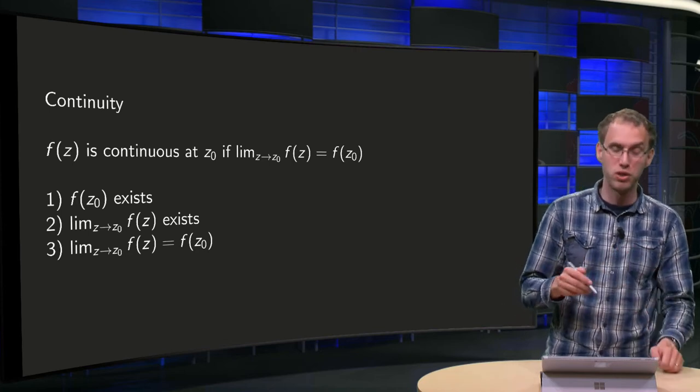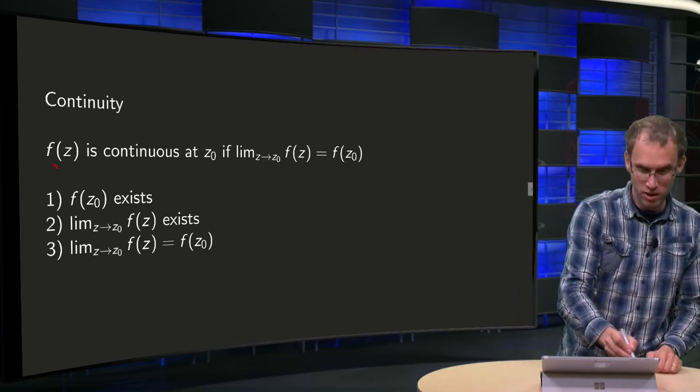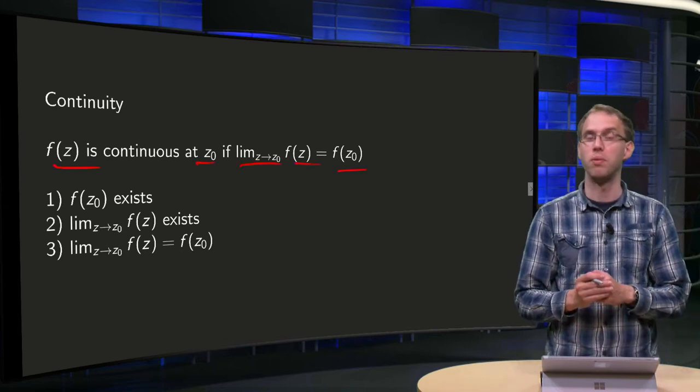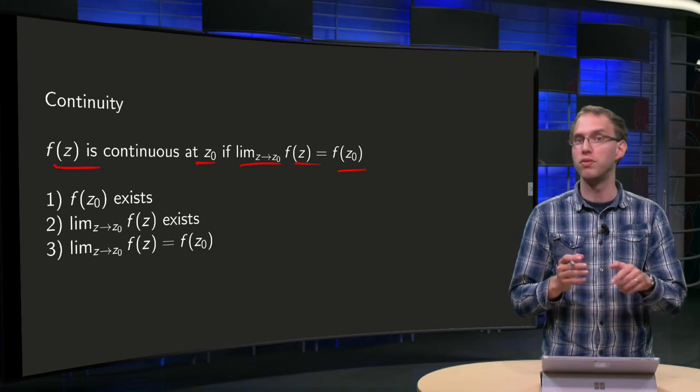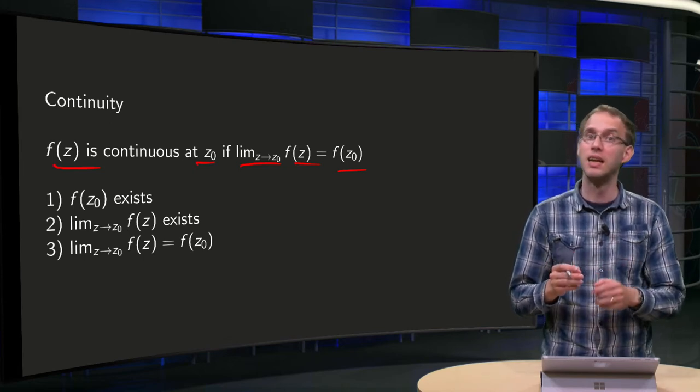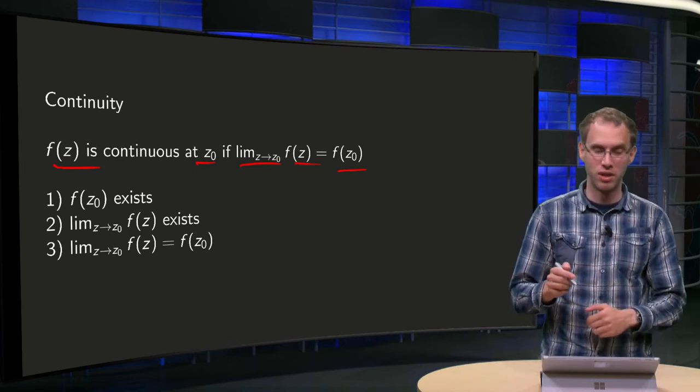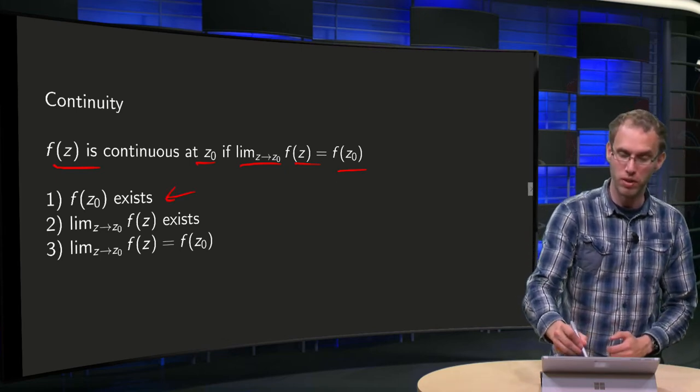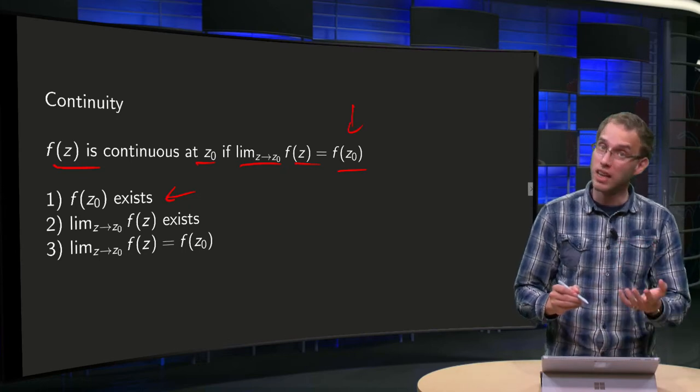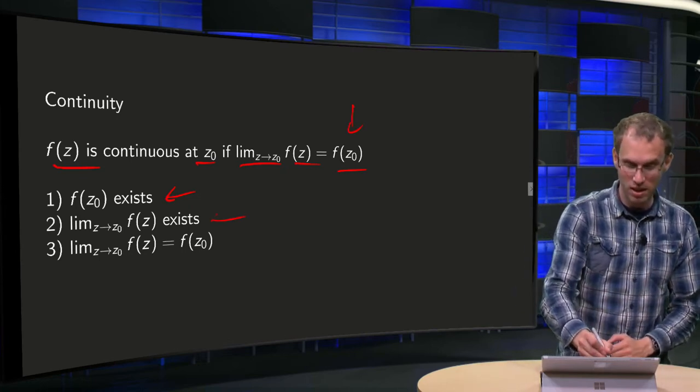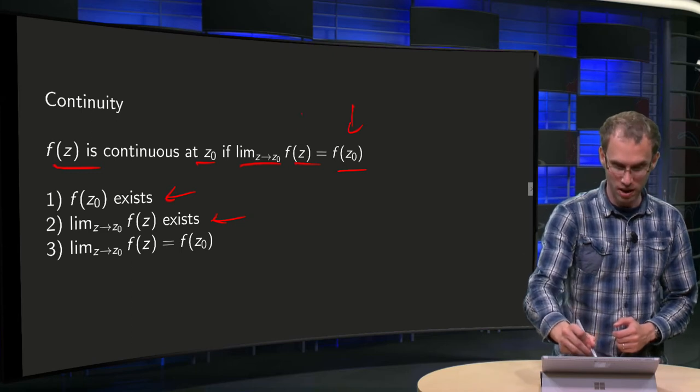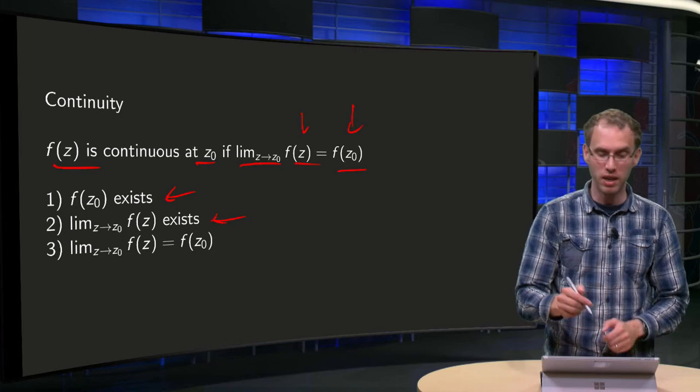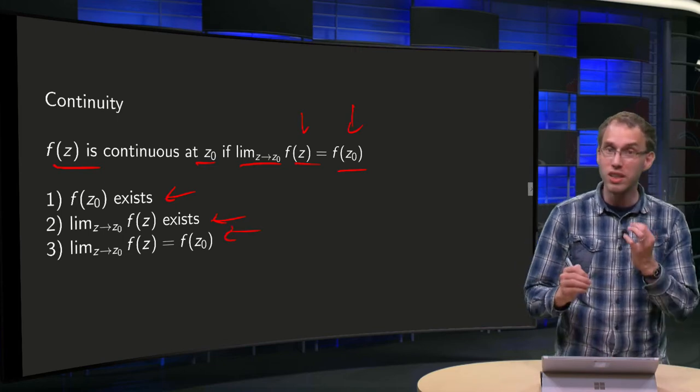What's the definition of continuity in the complex case? f(z) is continuous at z₀ if the limit as z→z₀ of f(z) equals f(z₀), same as in the real case where you replace z by x. We have three things here: first, f(z₀) needs to exist, otherwise this is not defined. Second, the limit exists, otherwise the left-hand side is not defined. And third, left and right have to be equal.